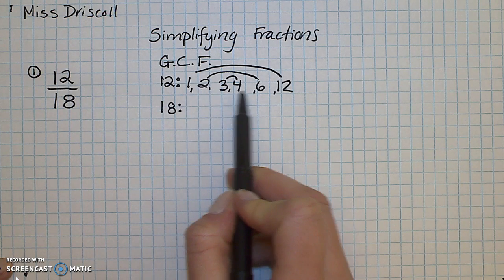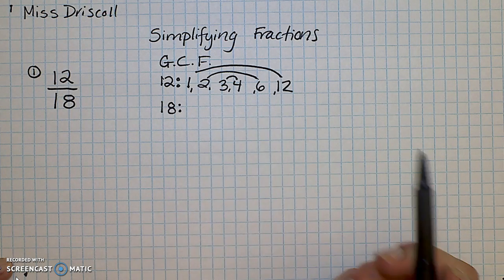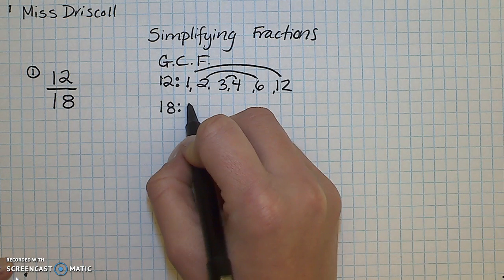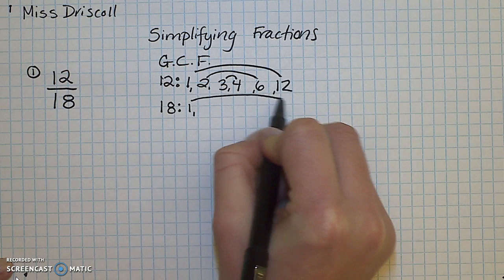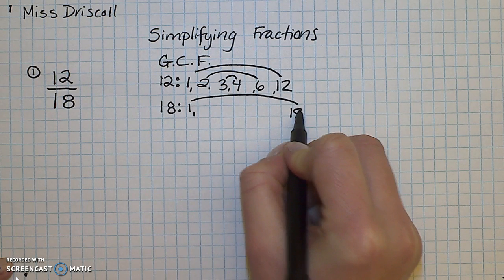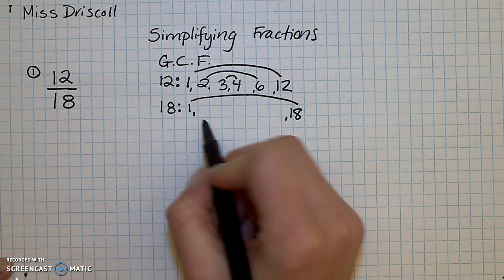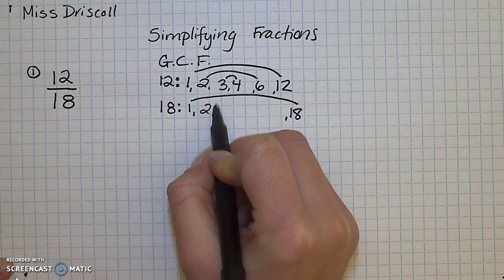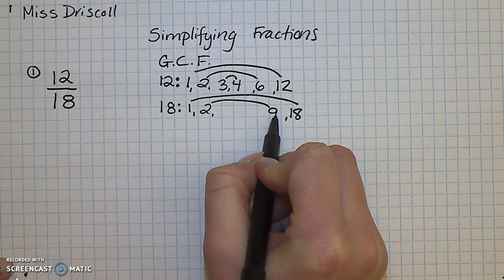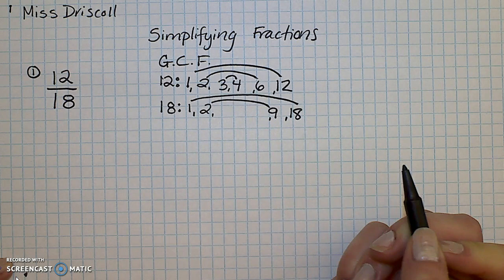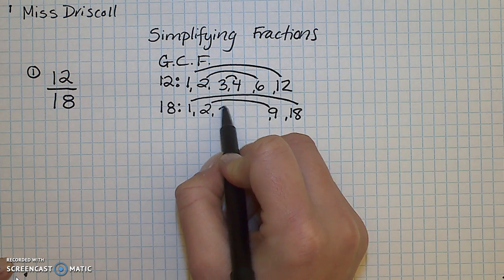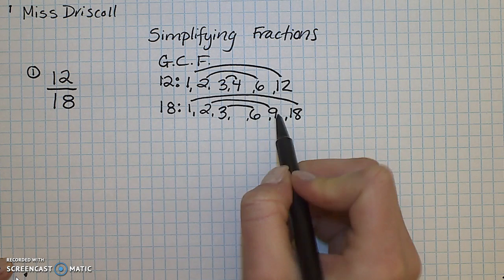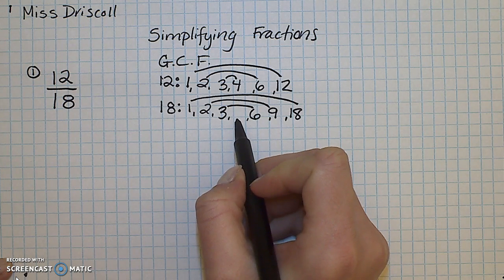I have 1, 2, 3, 4, 6, and 12. I'm going to do the same thing for 18. Remember my freebies — 1 and the number itself are factors. Can 2 go into it? Yes, 18 is an even number, so I know 2 is a factor: 2 times 9. Is 3 a factor? Yes, 3 times 6. Is 4 a factor? No. Is 5? No.